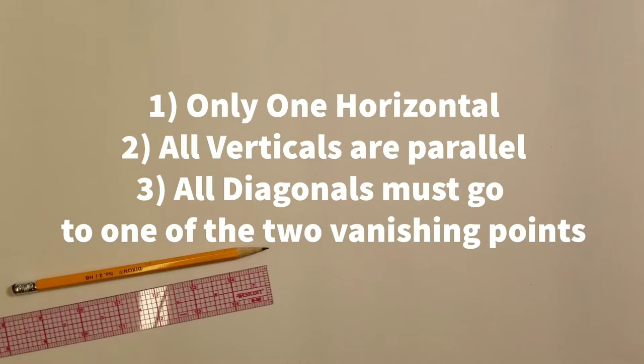Before we get started, we need to go over the three rules of drawing a two-point perspective drawing. The first rule is there is only one horizontal in this picture. Only one horizontal line.